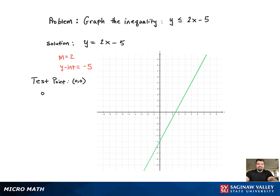And now I'm going to plug that in and see if I get a true statement. But when I plug this in, I get 0 less than or equal to negative 5, and 0 is greater than negative 5, so that's false.